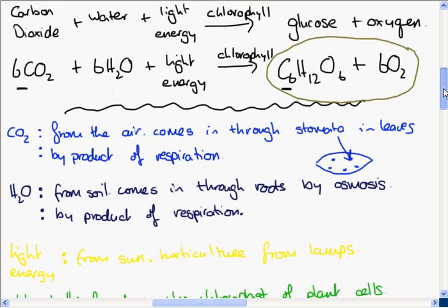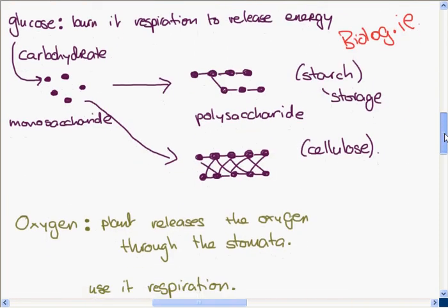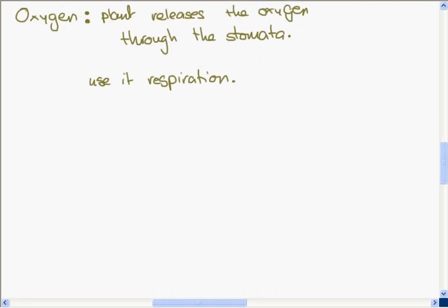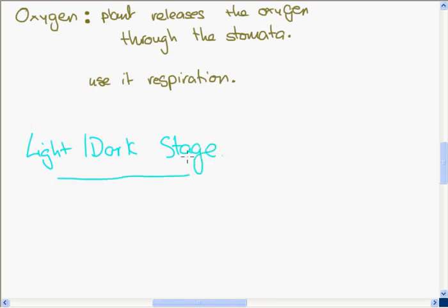Those are the basics of photosynthesis — the introduction. The next thing we need to learn about is the exact process: the light stage and the dark stage — exactly how does the plant carry out photosynthesis? I think this video has been long enough so I'm going to leave that for another video. Keep an eye on biolog.ie and you will find that video.